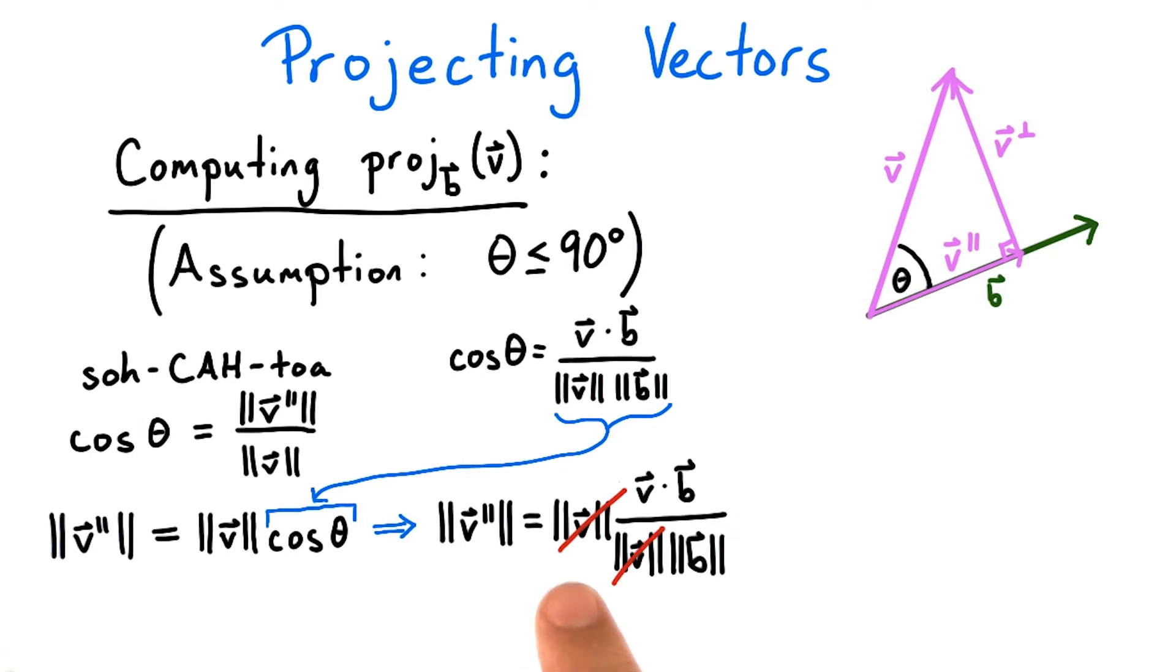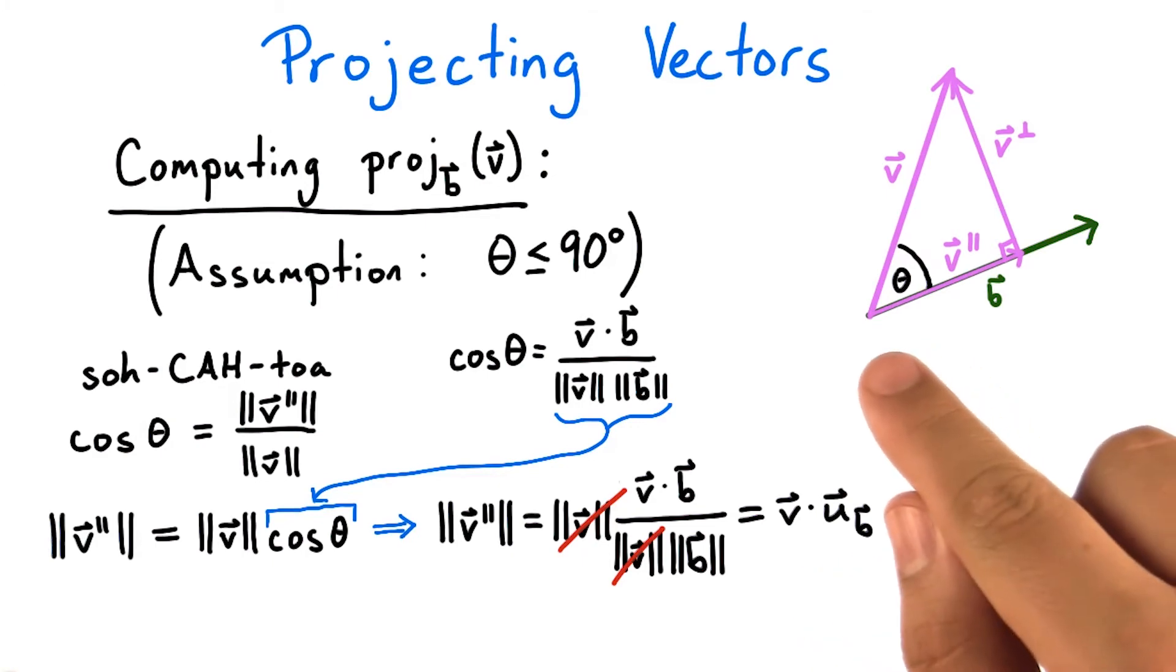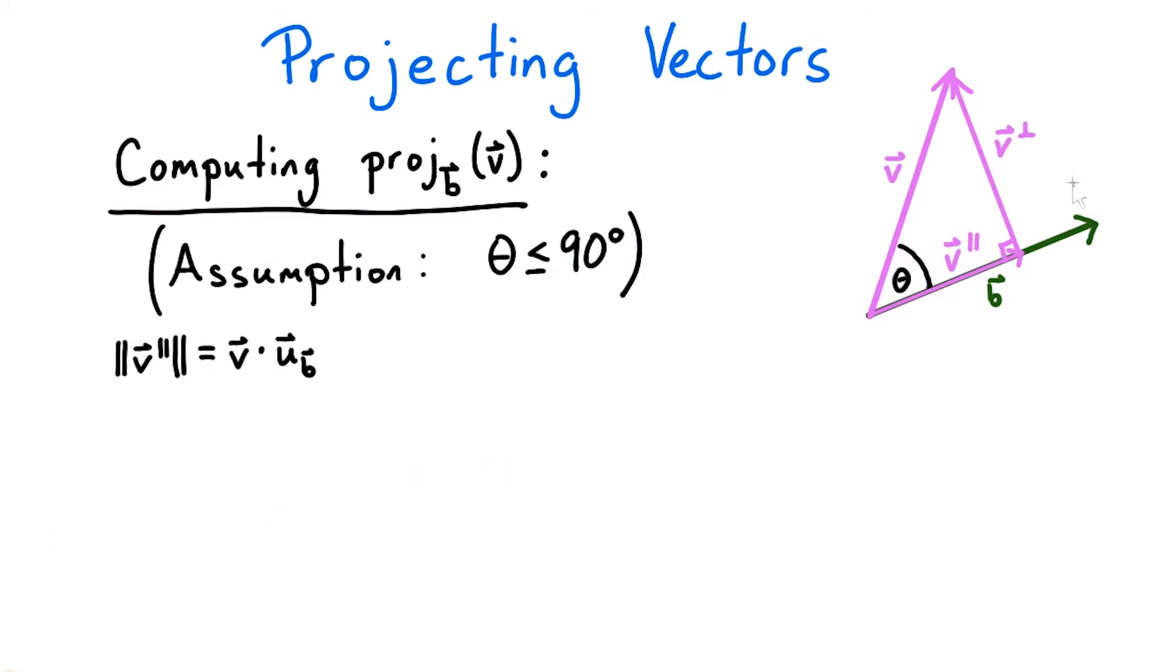And then we can rewrite what's left over as v dot u sub b, where u sub b is the unit vector in the direction of b, i.e. the normalization. All right, so I cleaned up some of these formulas and just left what we need going forward.